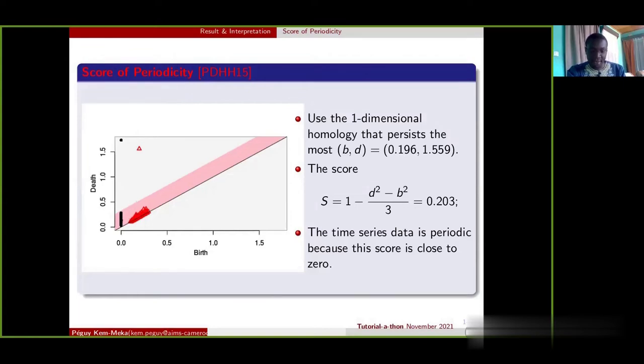This is the formula of the score of periodicity, where B and D are the birth and the death of the one-dimensional homology that exists the most. We can see that our score of periodicity is 0.203. Thus, the time series data that we have is periodic.